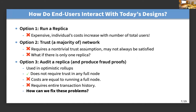So if you're an end user, how can you interact with today's designs? In one case, you can run a replica — that's expensive, and your computational costs increase as the number of users increases. In the case of CBDC, it might not even be possible. You could also just trust the majority of the network, but that doesn't necessarily satisfy every user. The third thing you could do — which is what we'll focus on — is to audit a replica and, for example, produce a fraud proof if something goes wrong. This is what's done in optimistic rollups. But on today's systems, the only way to check everything and produce a fraud proof is to just execute all the transactions, so costs are still bad. And you'd still need access to the entire transaction history, which might not be possible with access controls.